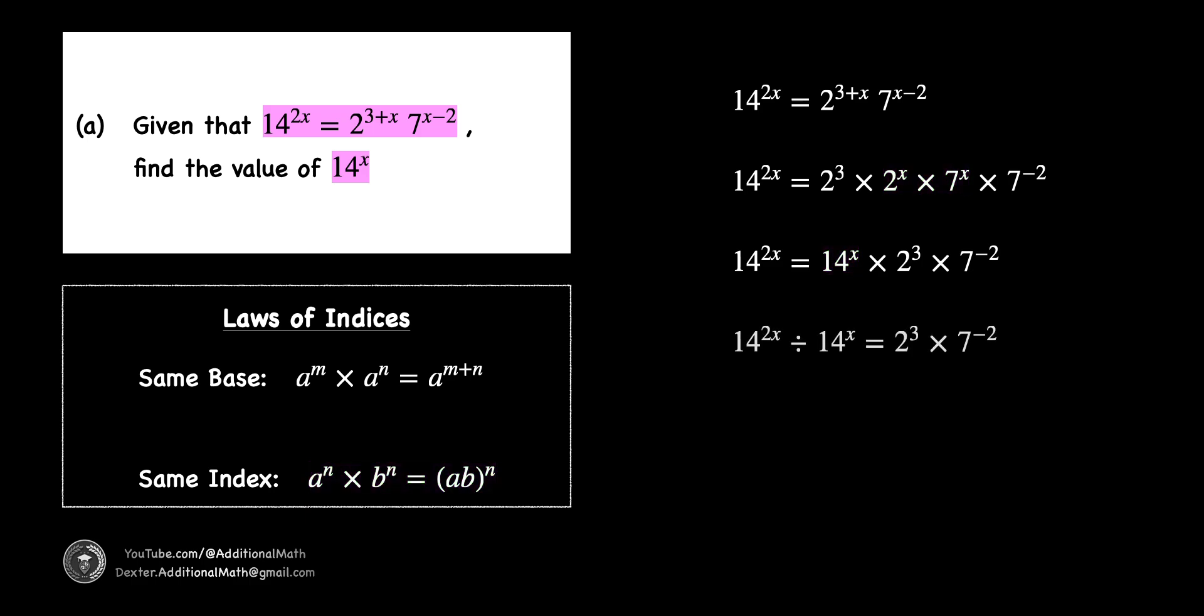Then, we shift the 14 to the power of x to the left by dividing while keeping the constants on the right. Similarly, when dividing indices with the same base, we subtract the powers to give us the value of 14 to the power of x to be 8 over 49.